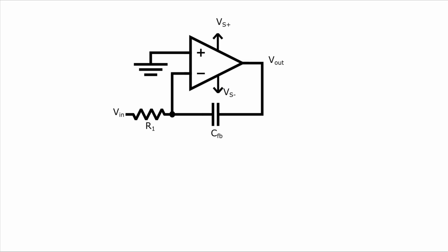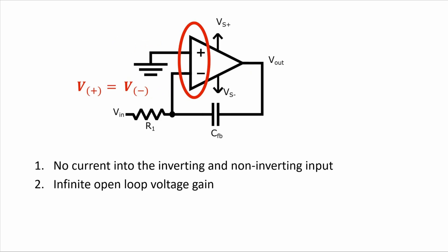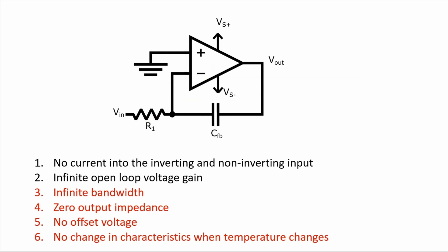To do this analysis we are going to assume that this op-amp is ideal, which means no current flows into the inverting or non-inverting inputs and the open-loop voltage gain is infinite. With this negative feedback, the voltage at the inverting terminal and the voltage at the non-inverting terminal will be the same. We can also assume these other characteristics but they don't have as much of an effect on the analysis.